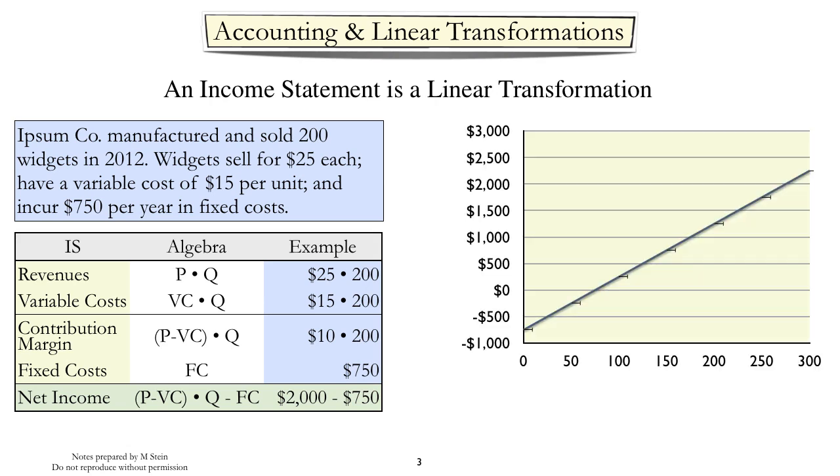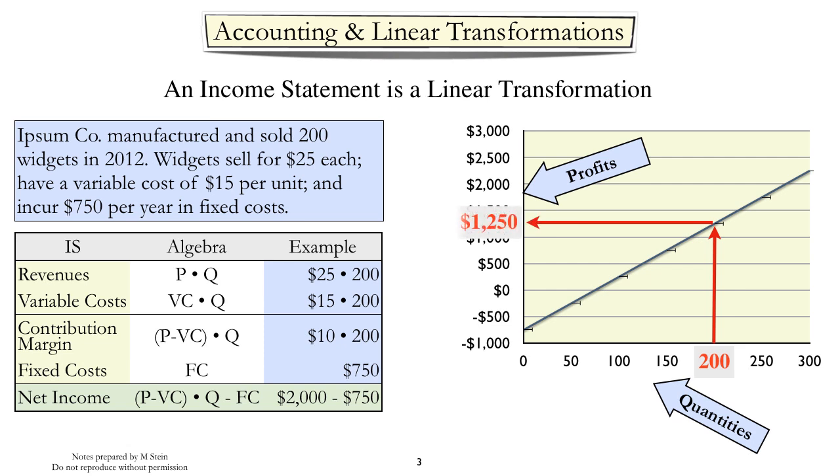Let's draw the picture of that transformation. If we draw the picture where we have quantities on one axis and profits on the other axis, then the line, or the graph, represents the linear transformation from quantities to profits. If we start with a quantity of 200, we end up with a profit of $1250. If we started with a quantity of 100, we would reflect that off the line and see a profit of $250. The line then represents the linear transformation of quantities into profits.